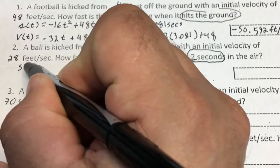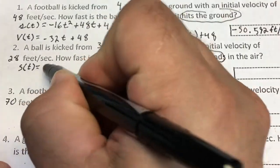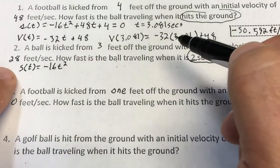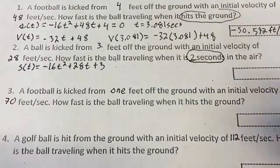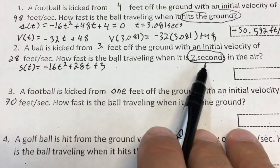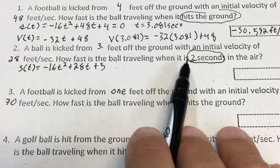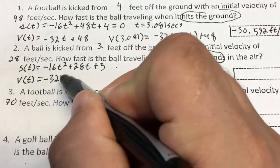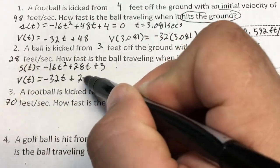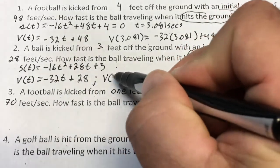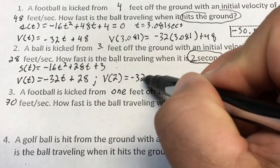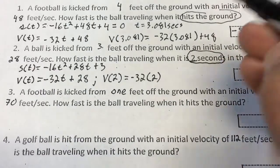So I'm going to write the position function: s of t equals negative 16t squared plus 28t plus 3. I want to know how fast it's traveling when it's 2 seconds in the air, so t equals 2, and I'm just going to plug 2 into my velocity. The velocity is the derivative of the position, which gives me negative 32t plus 28. So v of 2 equals negative 32 times 2 plus 28.